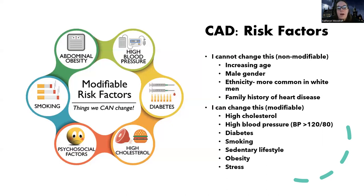There are things that we can modify. Some people get confused with modifiable risk factors because they say, 'I can't modify the fact that I have diabetes - there's no cure.' We're not modifying them in the sense of getting rid of them. Modifiable means I can make it better. These are all things we can improve upon to decrease someone's risk.